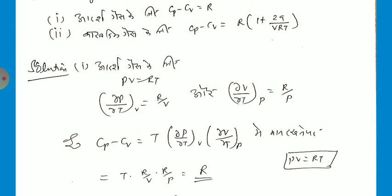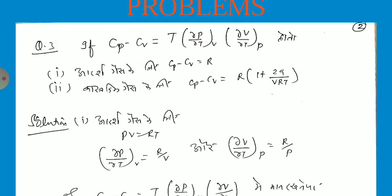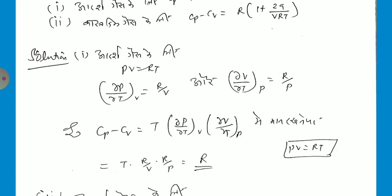So dQ/dT equals dQ/dT. And we also know that Cp minus Cv equals T times (del P / del T) at constant volume, multiplied by (del V / del T) at constant pressure. So Cp minus Cv equals T times del P by del T.